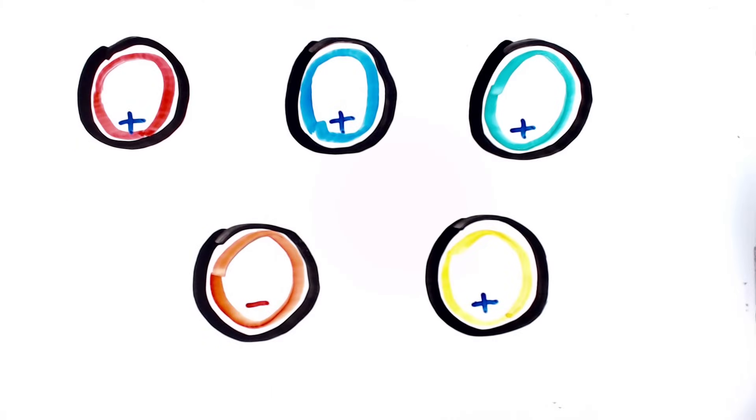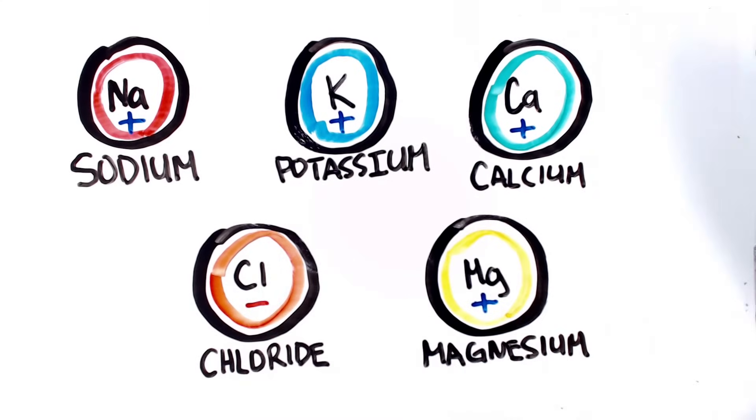Electrolytes are ions that carry an electrical charge and travel in and out of cells. The most common types of electrolytes in your body are sodium, potassium, calcium, chloride, and magnesium.